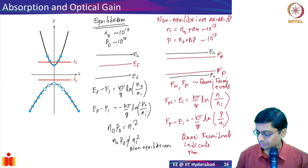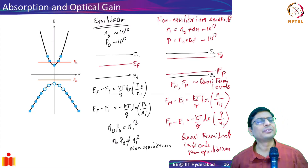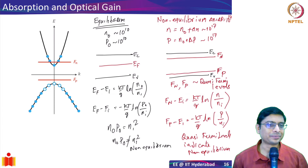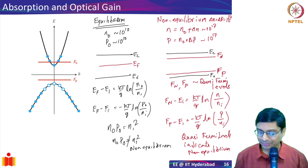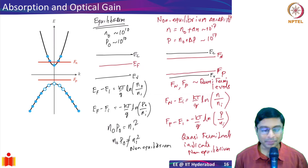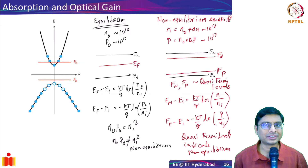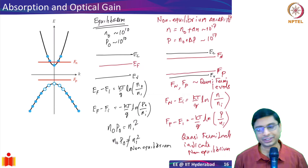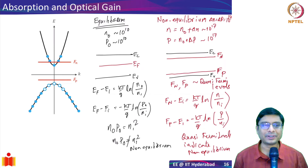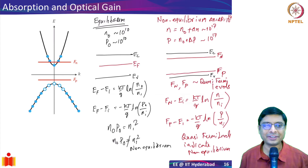Quasi-Fermi levels indicate a non-equilibrium condition. Whenever you have an LED, a laser, or any pumped device, you have a non-equilibrium situation. When you have this pumping, there is a quasi-Fermi level fn near the conduction band and fp near the valence band. Their exact positions depend on factors like the effective masses and the carrier concentrations.